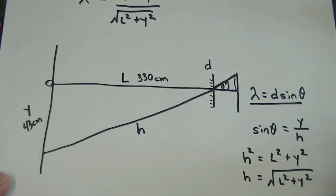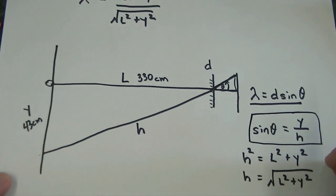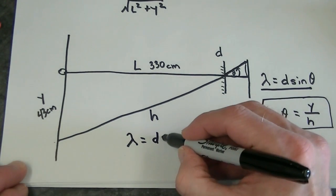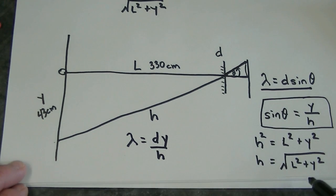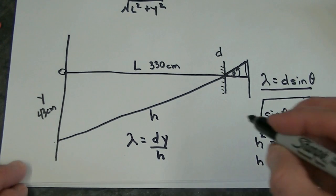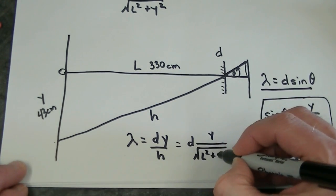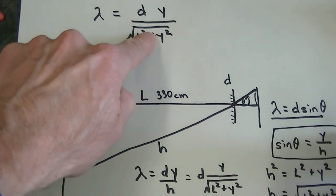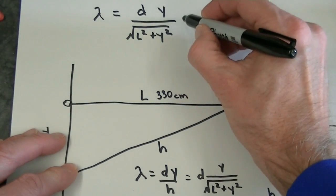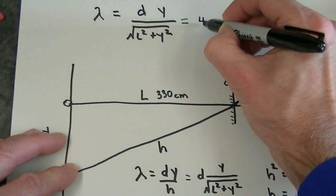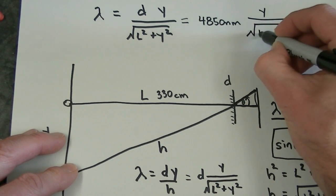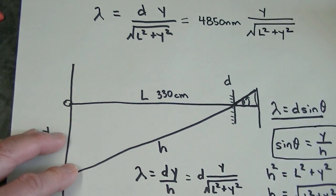Now we'll take our original equation, lambda equals D sine theta, and plug in Y over H for sine theta. If we do that, we get lambda equals D times Y over H, where H is the square root of L squared plus Y squared. This equation looks exactly like the one we were trying to show at the beginning. Since we know the distance between the slits in our diffraction grating to be 4,850 nanometers, we can write our equation in that form, which is what we used in the analysis of our data.